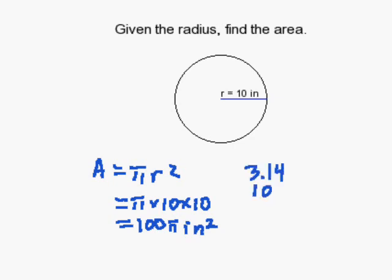3.14 times 100 gives us 314, so we can also say the area of this circle is 314 inches squared. That completes our problem.